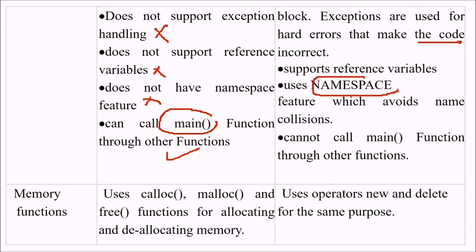C does not have any namespace feature and can call the main function through other functions. While in C++, it supports namespaces and reference variables. The namespace feature avoids name collisions or function name collisions. In C++, we cannot call the main function through another function, but in C we can.